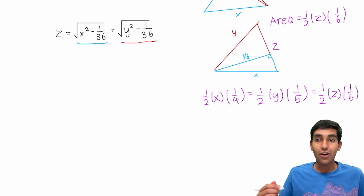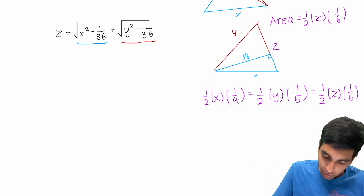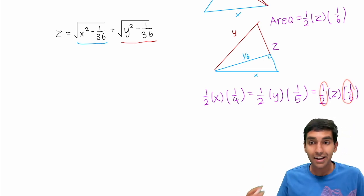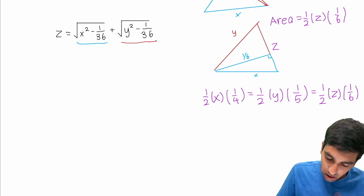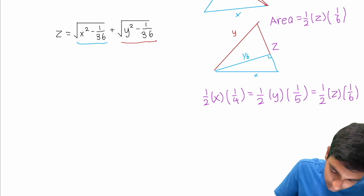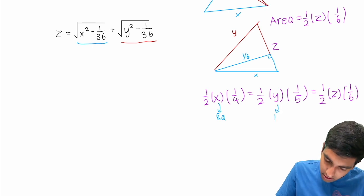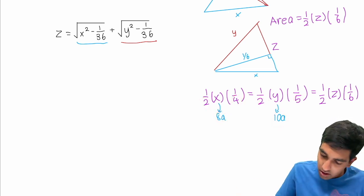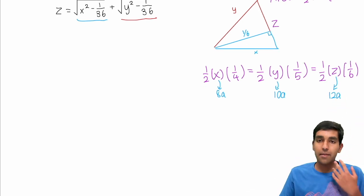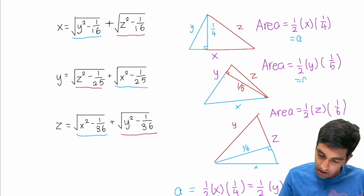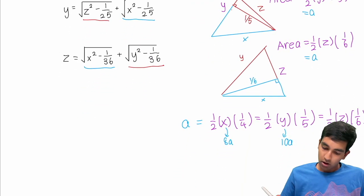We can use this information to find the ratio of x to y to z. We have one half times 1 over 4 for x, one half times 1 over 5 for y, and one half times 1 over 6 for z. Let's say x is 8a, where a is just another constant. Then y is 10a — because 8a times 1 over 8 equals a, and 10a times 1 over 10 equals a. And by the same logic, z is 12a, because 12a times one half times 1 over 6 equals a.